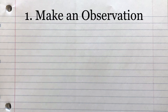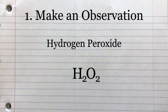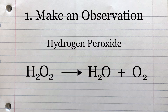The first step in the scientific method is making an observation. You probably know hydrogen peroxide as an antiseptic used to kill bacteria in cuts or scrapes. This is a liquid with the chemical formula H2O2. When it breaks down, it very slowly turns into water H2O and oxygen O2.